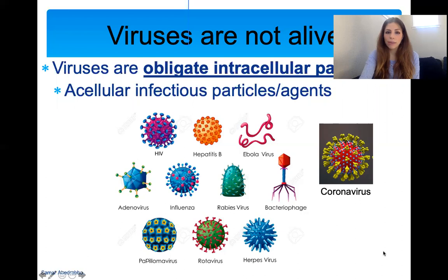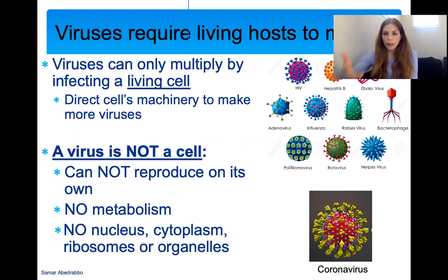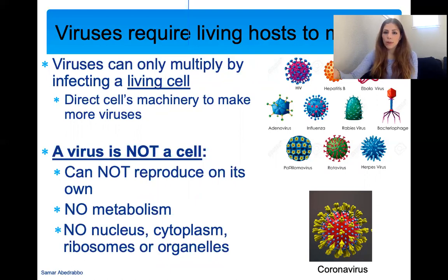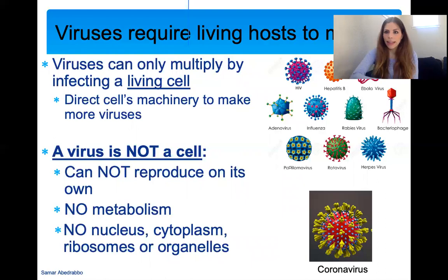Viruses require living hosts to multiply, replicate, or infect — these terms mean the same thing for viruses. They need a living host because they need to take advantage of the host's molecular machinery. They're not alive so they cannot reproduce on their own. They don't have a metabolism, so they use the host's metabolism to multiply. They don't have a nucleus, cytoplasm, or ribosomes. They hijack the host cell — if they infect you, you are the host; if they infect bacteria, bacteria is the host — and use its molecular machinery to make copies of themselves.